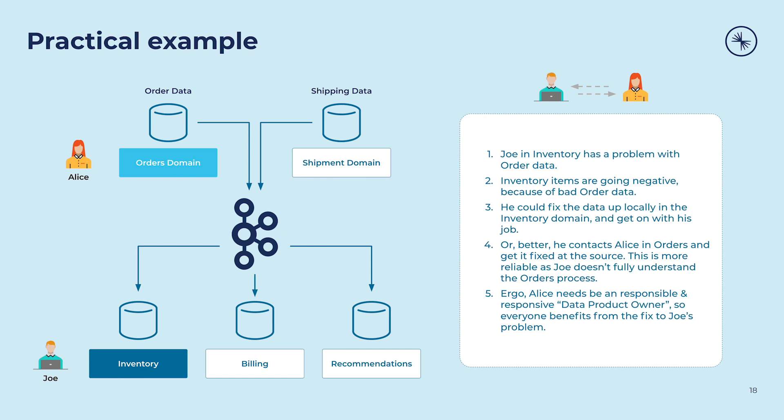A better approach is for Alice to fix Joe's problem at the source, for the benefit not just of Joe but anybody else who might want to consume her data product. In this way, everybody in the organization can benefit from this change. For that to work, there have to be a couple of things: first, a process where Joe and Alice can communicate quickly; and second, Alice has to be a responsible member of the data mesh — both willing and able to make changes like this quickly, so her data in the mesh is always of good quality. There have to be incentives in place for Alice to think of this as a product she's maintaining.